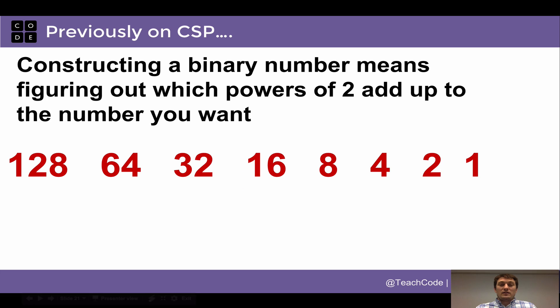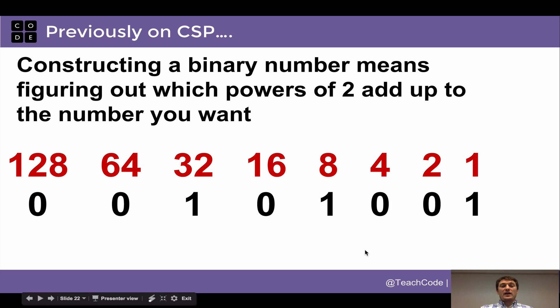Since binary numbers only have zeros and ones, constructing a binary number, you're either multiplying a place value by one or by zero. So really, the art of figuring out what a binary number is, is just figuring out which powers of two add up to the number you want. And you typically start at the high end. So if I put zeros and ones underneath these place values, so this in black here, there's a binary number. All we have to do to figure out what this means is we say, ah, this is a 32 plus an eight plus a one, and that comes out to the number 41.